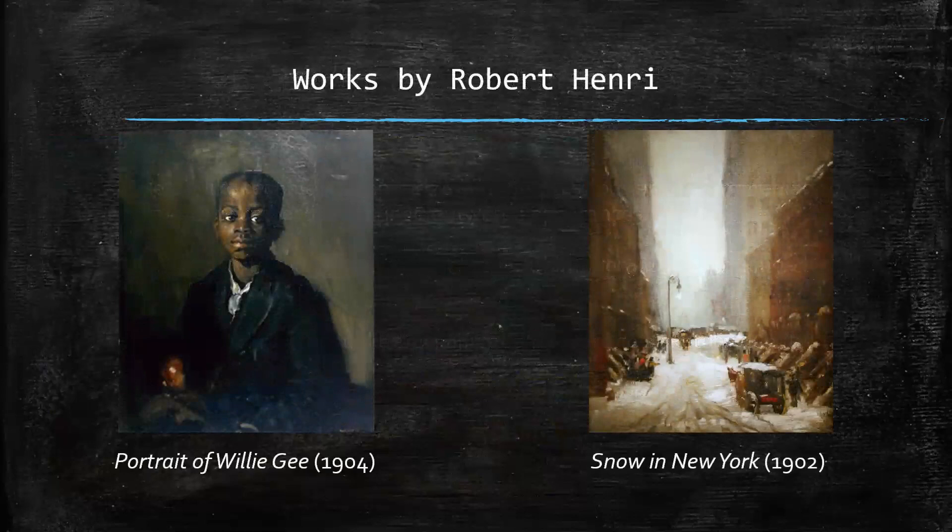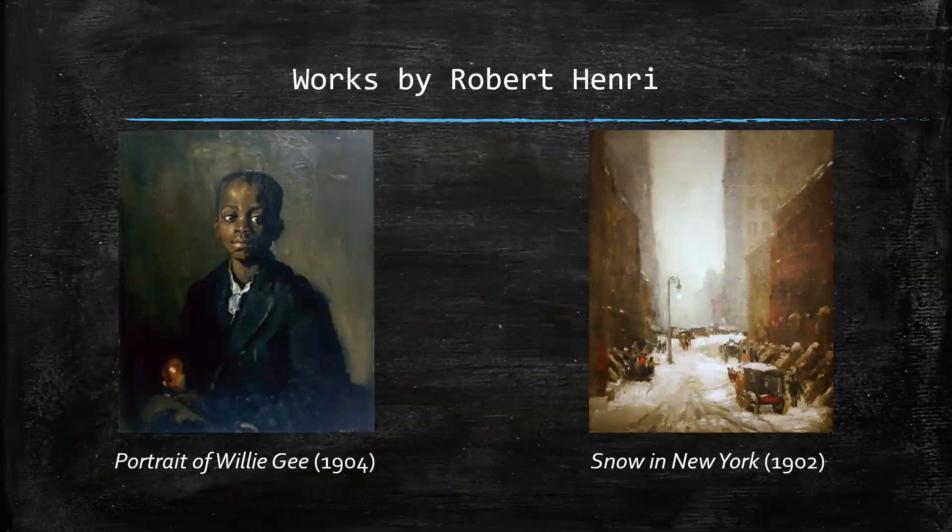Here we have a couple of examples. On the left is Portrait of Willie Gee, and on the right we have Snow in New York, both by Robert Henri. On the left, you can see the portrait of the young boy — there's a great amount of detail on his face, showing his technical expertise, but on the outside, just like the impressionist style, you have broad brushstrokes and dark colors. Snow in New York gives you a great feel for what it would be like to be on the streets of New York in 1902.